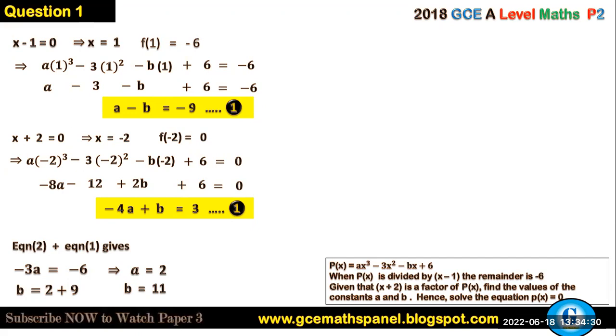From these two equations, if we add equation 1 to equation 2, we will obtain -3a = -6, implying a = 2. If we substitute this value of a in equation 1, we have b = 11.